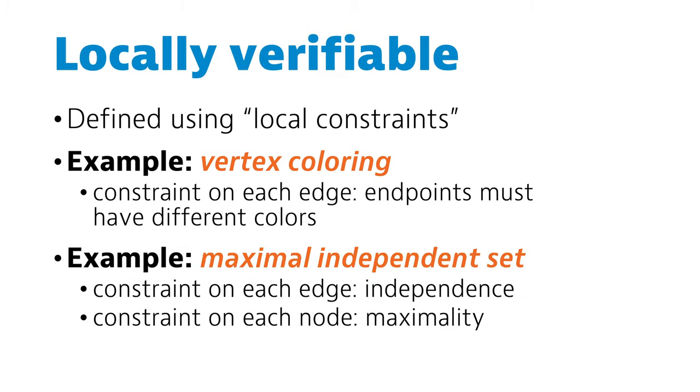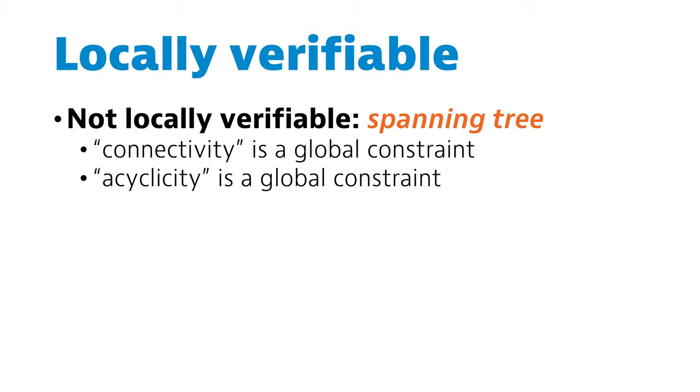A maximal independent set is also something you can define using local constraints. Independence can be checked by looking at each edge. Maximality can be checked by looking at the local neighborhood of each node. On the other hand, connectivity and acyclicity are global properties, so we can't study problems like spanning trees using these tools.